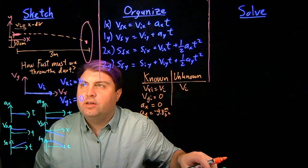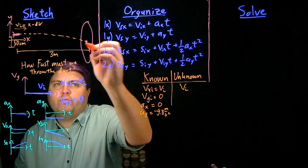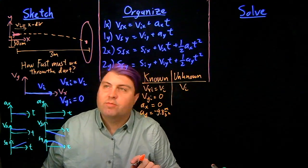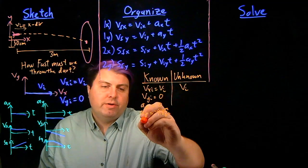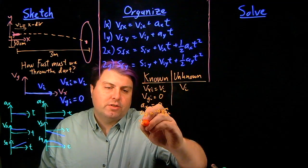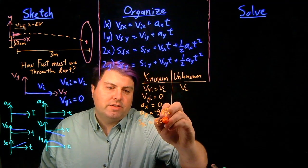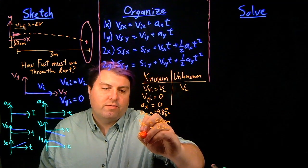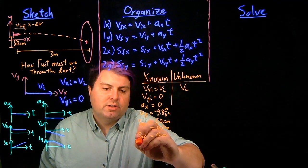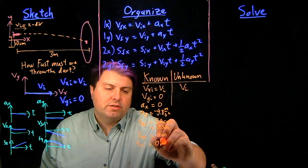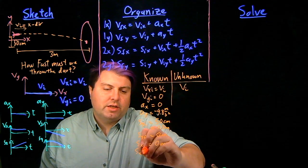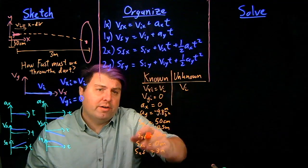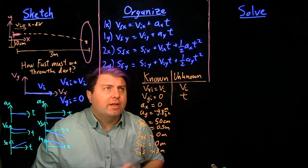We know that the initial position, aligned with the bullseye but back where the dart is, is probably a good origin right around here. So we can say that our initial position in the y is 50 centimeters, which is 0.5 meters. Our final position in the y would then be zero meters. Our initial position in the x would be zero meters, and our final position in the x would be three meters. We haven't written time anywhere in our knowns, so our time will have to be an unknown.